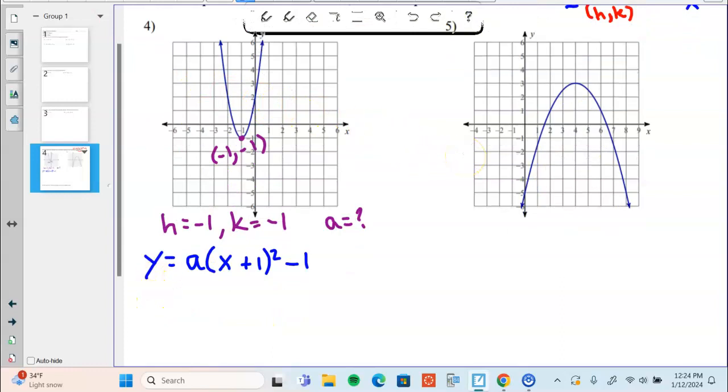Now what I'm going to do is I'm going to find another nice point on the graph. Zero, two is a nice point that the graph goes through, and if I plug in x equals zero and y equals two, I'll be able to find a.